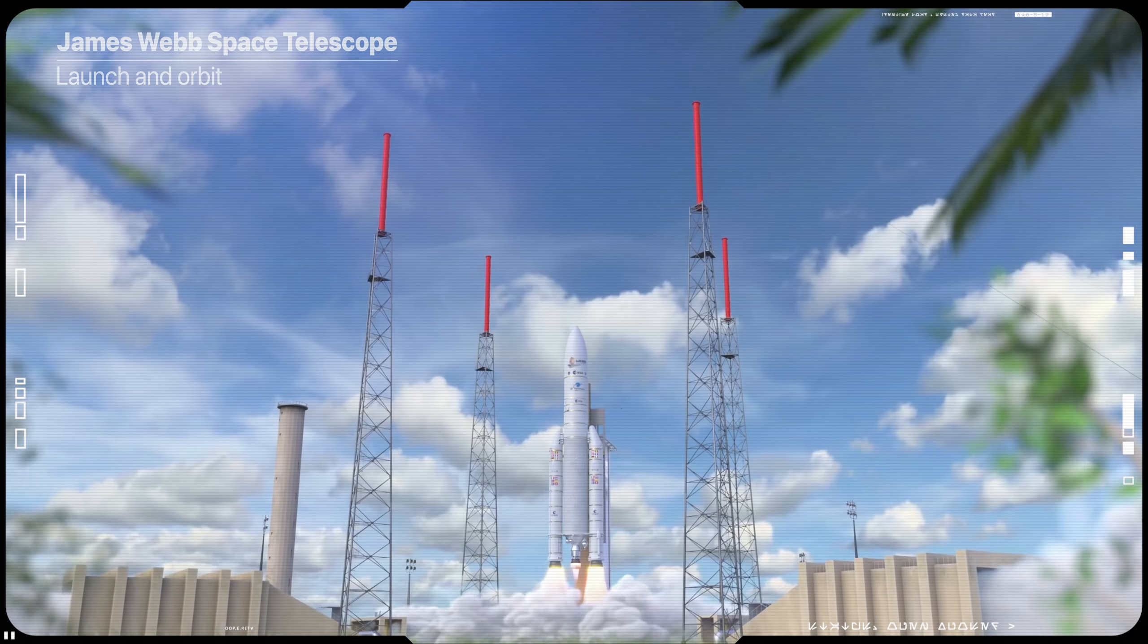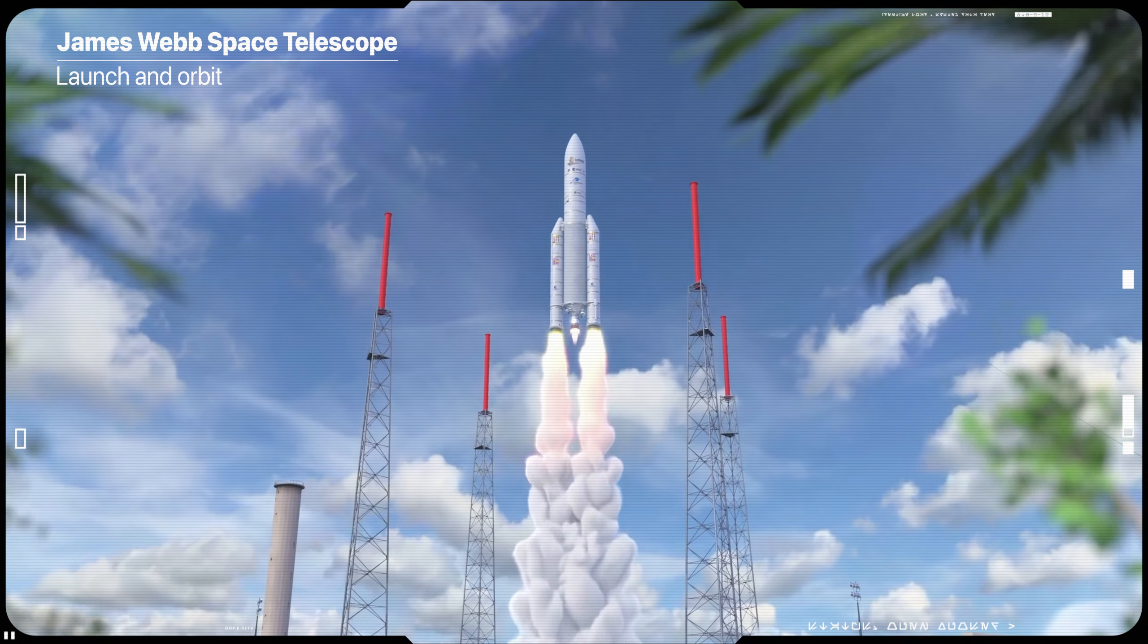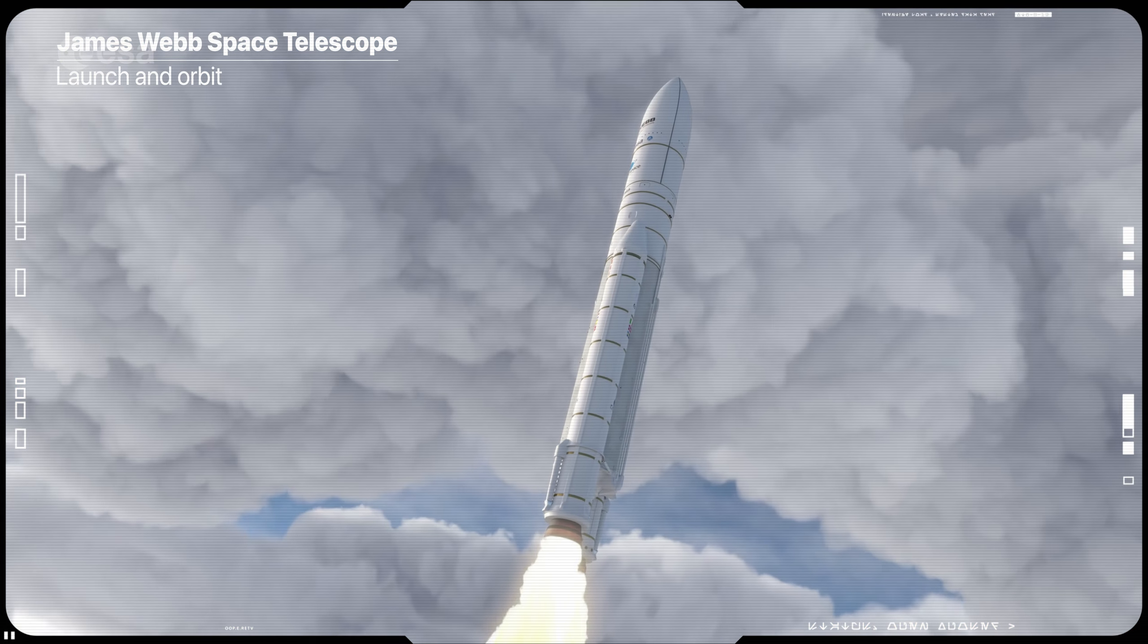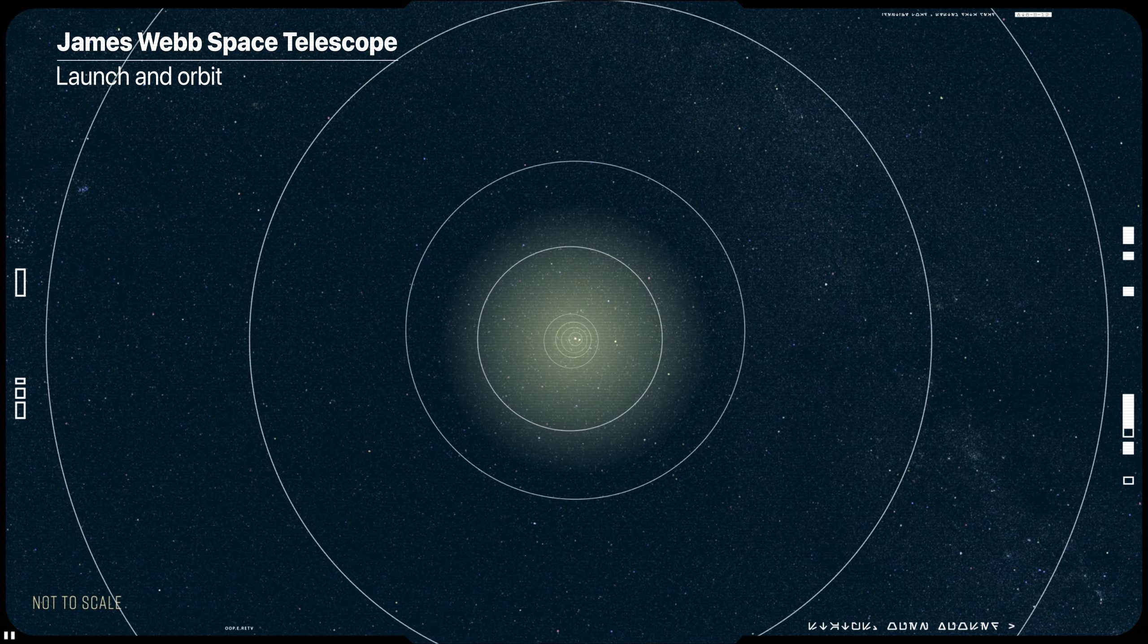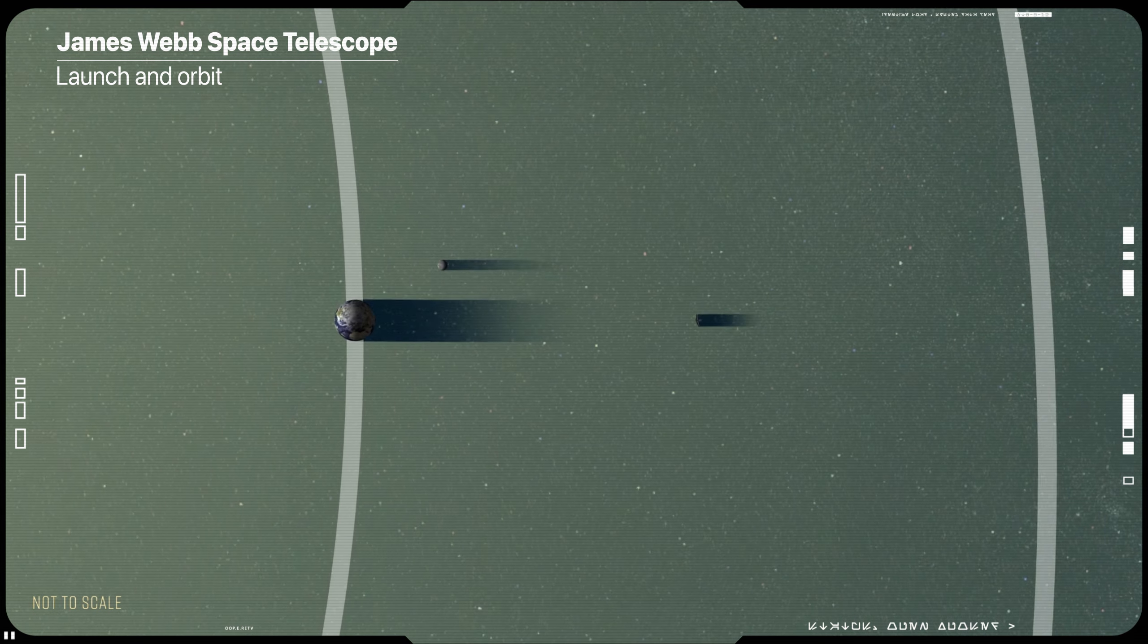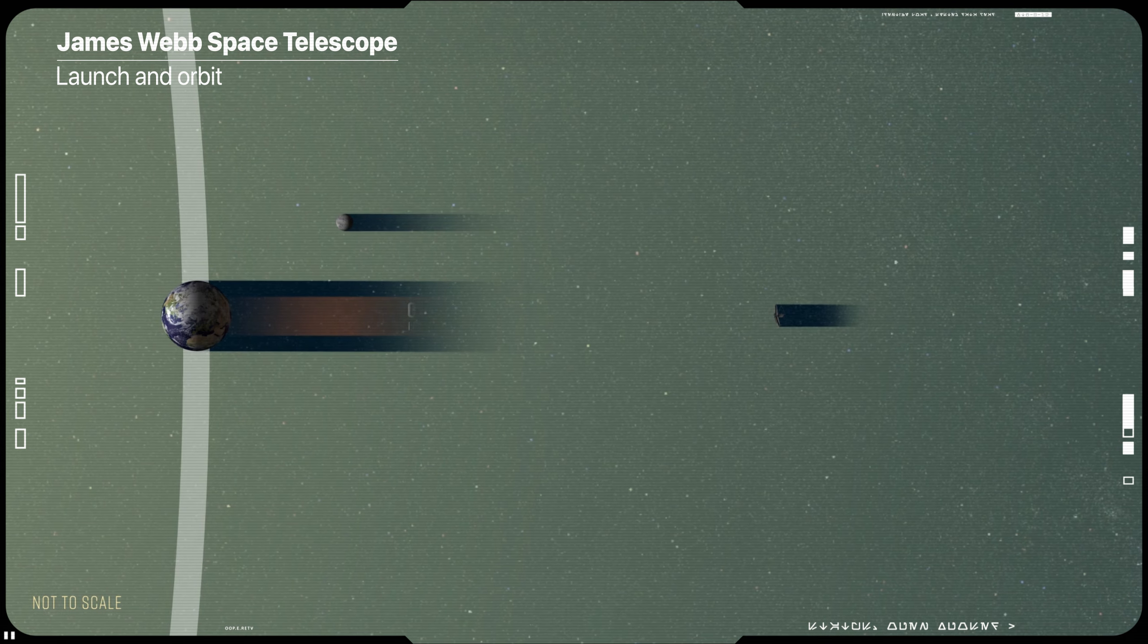Launched from Guyana Space Center on December 25th using Ariane 5 rocket, the telescope will orbit the sun one and a half million kilometers away, four times farther away from Earth than the moon, at what is called the second Lagrange point or L2.